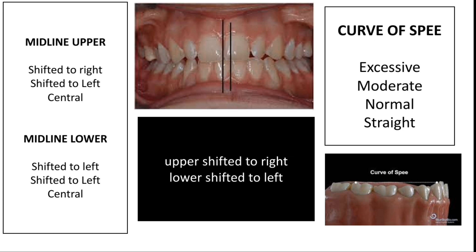As I have discussed, you can see in the picture that in the upper arch it is shifted towards the right while the lower arch is shifted towards the left. So the midline is very important to observe in both upper and lower arches. You also have to look for the Curve of Spee — whether it is excessive, moderate, or normal, or if the curve is straight.